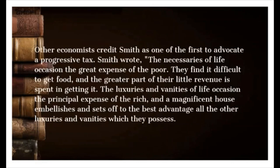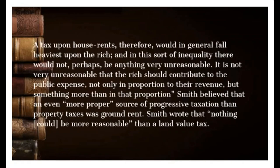Other economists credit Smith as one of the first to advocate a progressive tax. Smith wrote: 'The necessaries of life occasion the great expense of the poor. They find it difficult to get food, and the greater part of their little revenue is spent in getting it. The luxuries and vanities of life occasion the principal expense of the rich, and a magnificent house embellishes and sets off to the best advantage all the other luxuries and vanities which they possess. A tax upon house rents, therefore, would in general fall heaviest upon the rich. And in this sort of inequality there would not, perhaps, be anything very unreasonable. It is not very unreasonable that the rich should contribute to the public expense, not only in proportion to their revenue, but something more than in that proportion.' Smith believed that an even more proper source of progressive taxation than property taxes was ground rent, writing that nothing could be more reasonable than a land value tax.